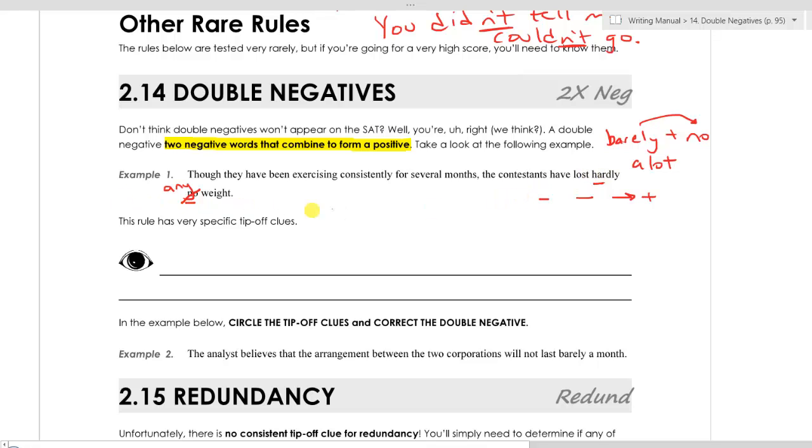probably the best change is to cross off this second negative and write any. The contestants have lost hardly any weight. If you got rid of the hardly, that would be okay too. Then you would just be saying the contestants have lost no weight. That's perfectly fine, however, it does seem like the writer of this sentence intended to say that the contestants have lost some weight, but very little. And this change, the contestants have lost hardly any weight, implies more so that they have lost some weight, just not a lot.